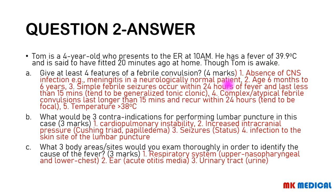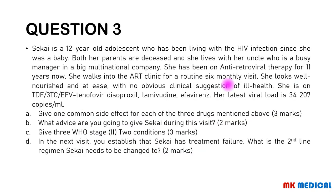Three contraindications for lumbar puncture: cardiopulmonary instability; increased intracranial pressure, which could be manifested by Cushing's triad or papilloedema; and seizures such as status epilepticus or recurrent seizures. You may also not perform it if there are skin infections at the lumbar puncture site. The three body areas to examine thoroughly are: the respiratory system — upper respiratory including the nasopharyngeal area and lower respiratory including the chest; the ear, in case of acute otitis media causing fever; and the urinary tract, so examine the genitalia and urine.